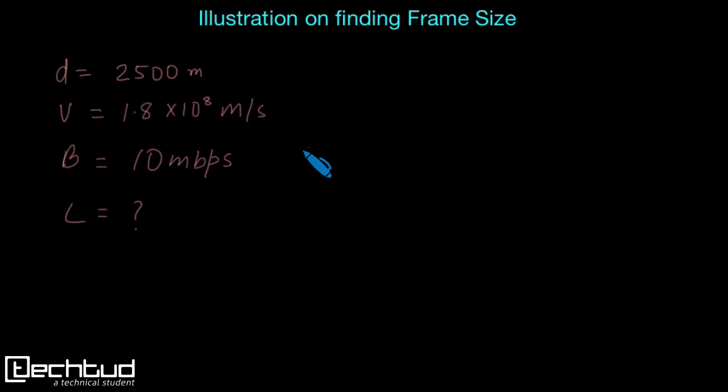So here we will just quickly solve the previous thing with the help of some numerical values. I have directly taken some values, but you will be getting questions in form of text like: it will be given a 2500 meter Ethernet line which runs on the capacity of 10 Mbps.